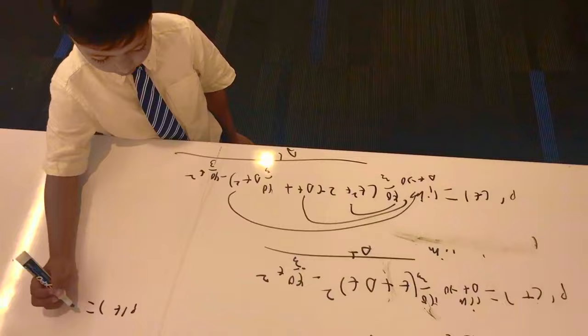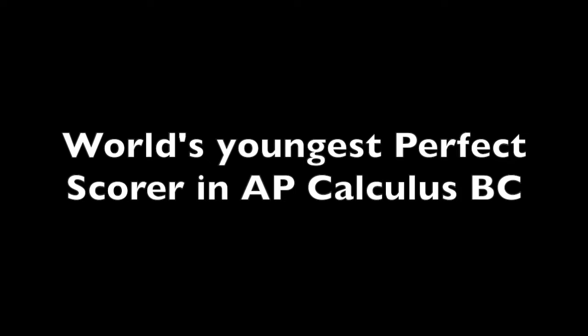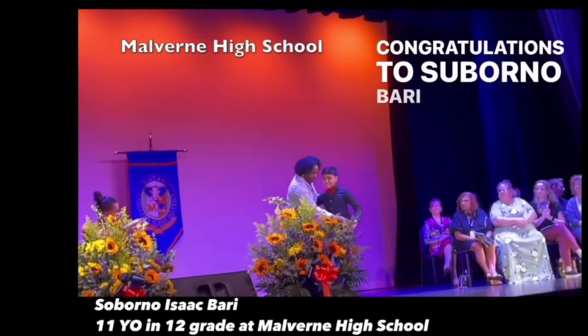That means p prime of t is equal to the limit as delta t goes to zero. Vance Placement Calculus BC — congratulations to Saborno Barry.